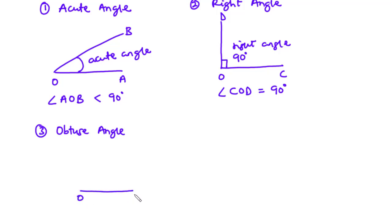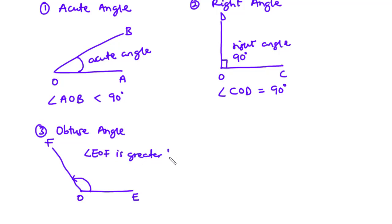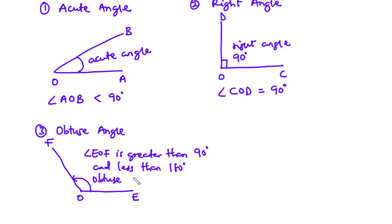Assuming we have line OE and line OF, the angle EOF is an obtuse angle because it is greater than 90 degrees and less than 180 degrees.